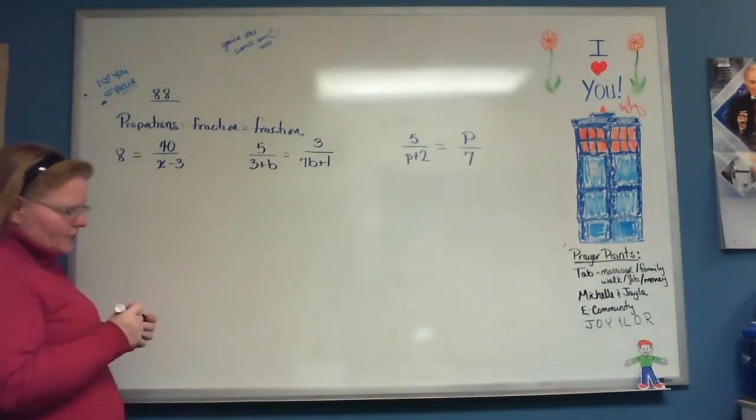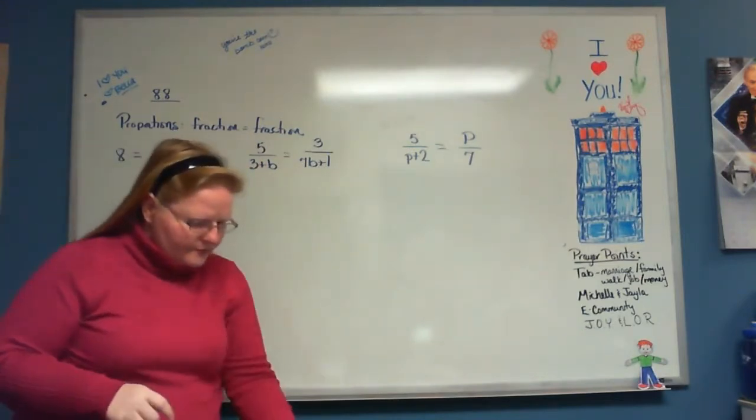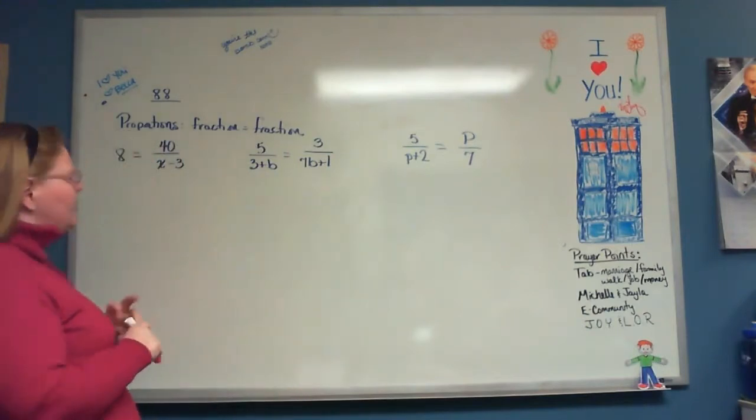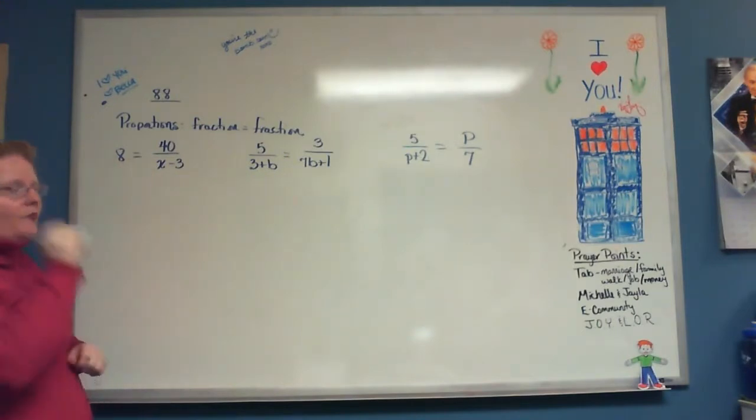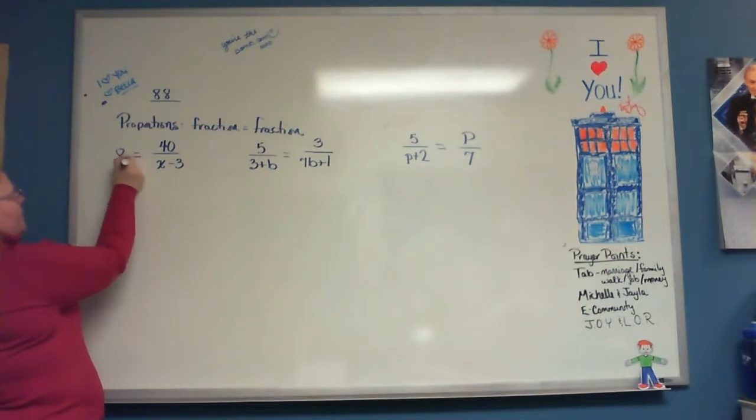So, change colors. Different color. Since I have a fraction equal to a fraction here, this isn't even written as a fraction right now. But I can write it as a fraction by putting a one underneath it. Now it's a fraction equal to a fraction that looks right.